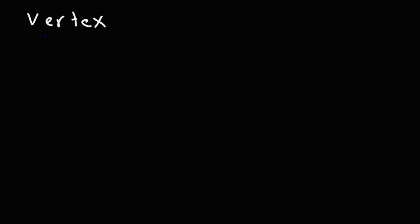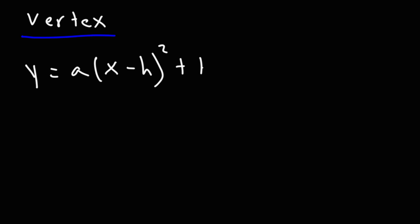Now let's move on to the vertex form of a quadratic equation. In order to go from standard form to vertex form, you need to complete the square. When you do, you turn it into this format: y = a(x − h)² + k. The a in this equation is the same as the a in the standard form. When you have it in vertex form, you can easily identify the coordinates of the vertex — it's simply (h, k).